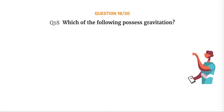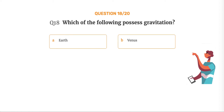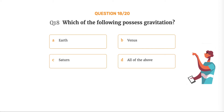Question number 18. Which of the following possesses gravitation? Option A: Earth. Option B: Moon. Option C: Saturn. Option D: All of the above.